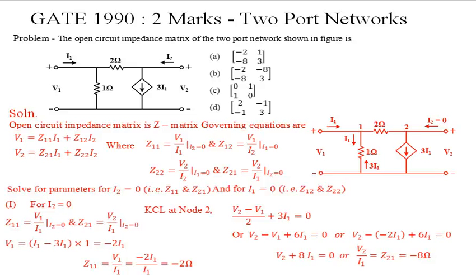Here we are considering a set of four problems on two-port networks. Two problems are on impedance matrices or impedance parameters, one problem is on ABCD parameters, and one problem is on Y and H parameters.